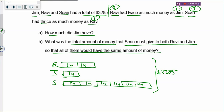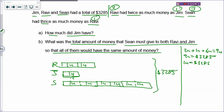How much did Jim have? The question mark is on Jim's box. Ravi has 2 units, Jim has 1 unit, and Sean has 6 units — together they have 9 units, which equals $3,285. You divide $3,285 by 9 and get $365, which is 1 unit. So Jim has $365.